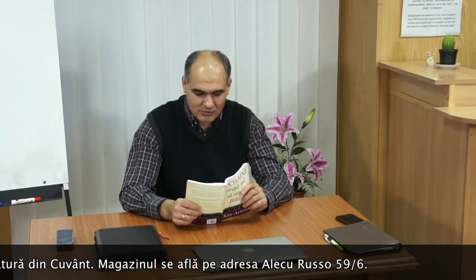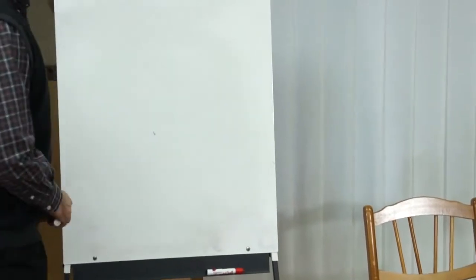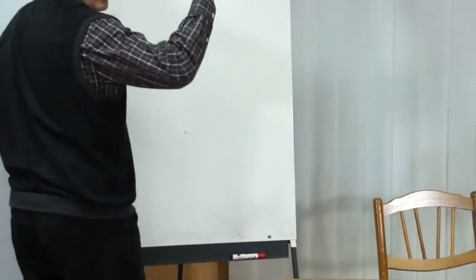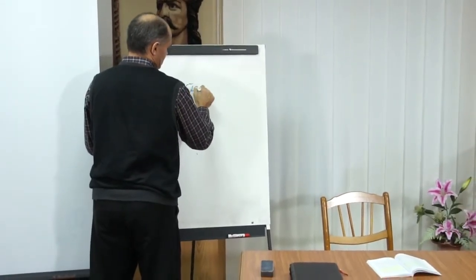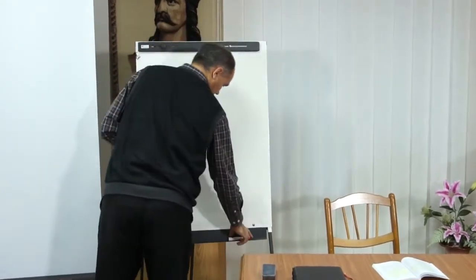Ai observat referințele la rugăciune atunci când ai notat Iona 1? Te sfătuiesc să notezi referințele la rugăciune ori de câte ori studiezi Biblia, ca să înveți ce spune cuvântul lui Dumnezeu despre acest subiect foarte important. Poți nota în același fel sinonimele pentru rugăciune — de exemplu, verbele a chema, a striga. Acum citește capitolul 1 și notează orice referință la rugăciune. Scrie o listă cu tot ce ai învățat despre rugăciune din acest capitol. Cuvântul rugăciune și sinonimele — a striga, a chema — care se referă la relația omului cu Dumnezeu.